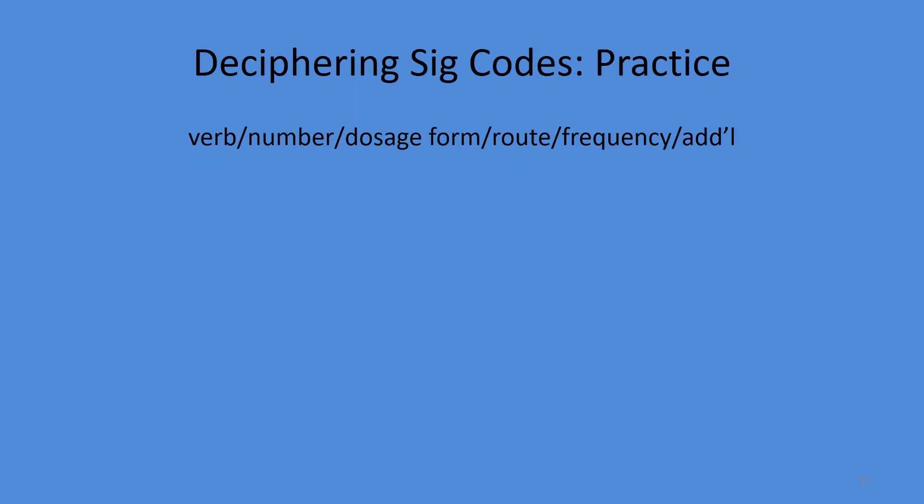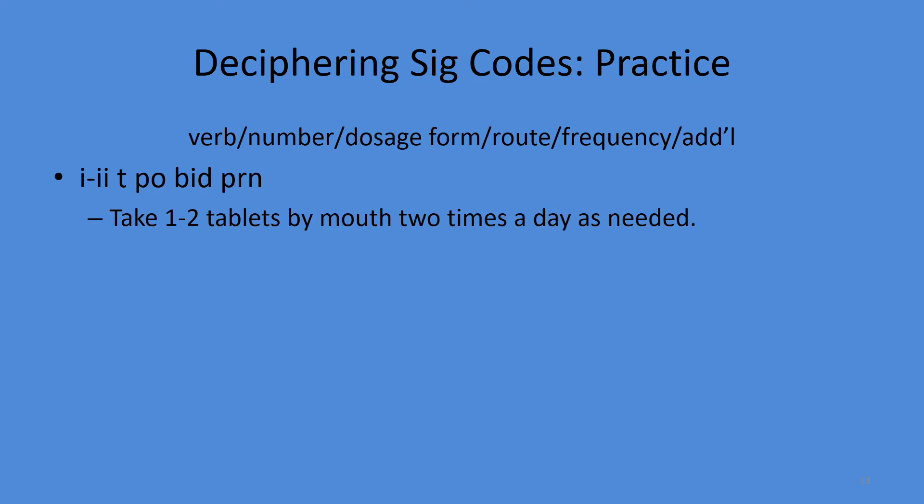Let's practice — we'll provide all six elements of the translation if required. First, identify the verb: PO means take by mouth. So we'll take one to two tablets by mouth BID — two times a day — as needed. Next: 10 mls PO q6h — PO tells us take, 10 mls equals two teaspoonsful, every six hours.